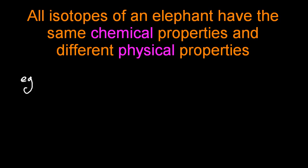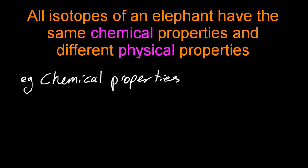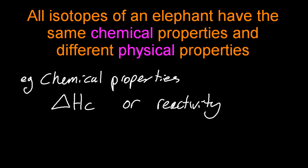Let's look at some chemical properties. Chemical properties are to do with the protons and the electrons — that's what chemistry is all about. For example, the heat of combustion for isotopes of a certain element, or its reactivity with fluorine, that's going to be identical for isotopes of that element.